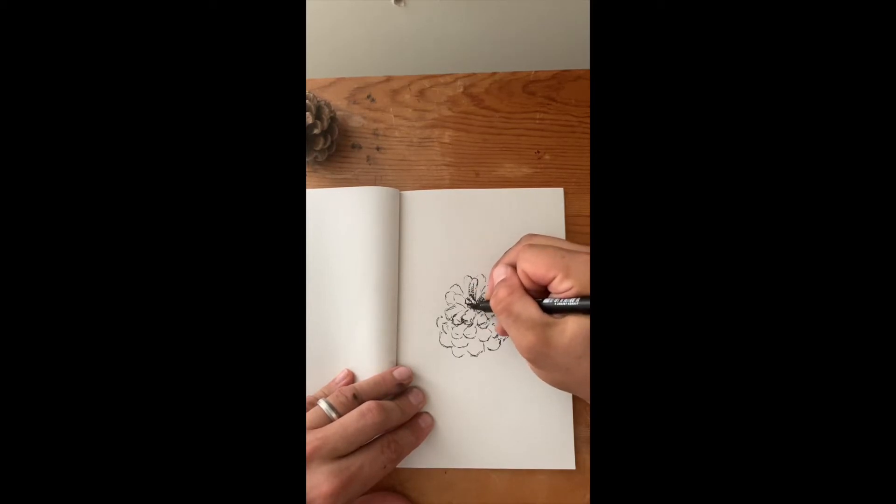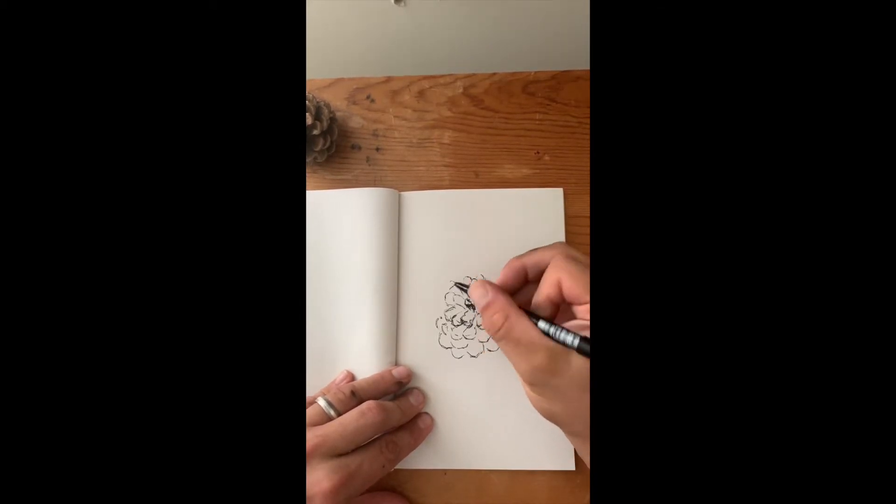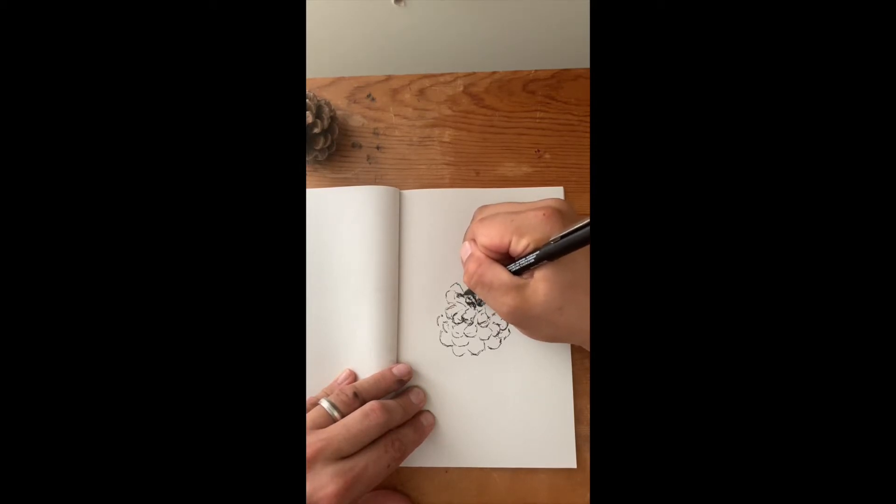But the pine cone is a good example because despite the fact that we maybe understand how the shape generally works, each one of these feels just a little bit different. So maybe the directional shading changes a little bit from piece to piece. And that's something that we really need to be aware of.